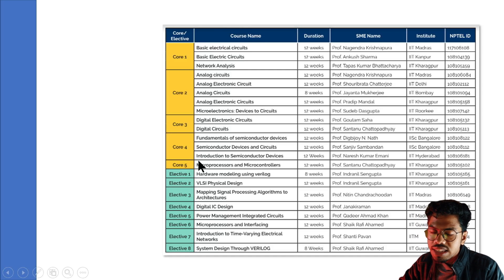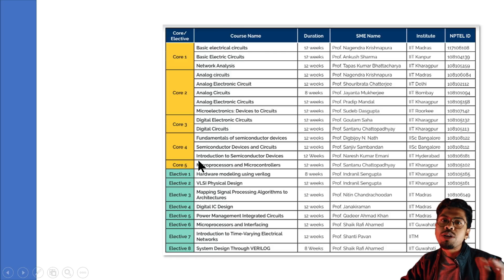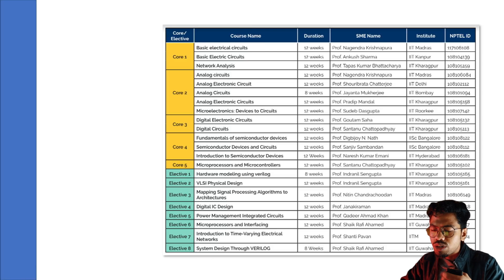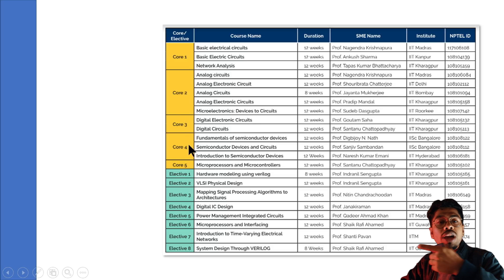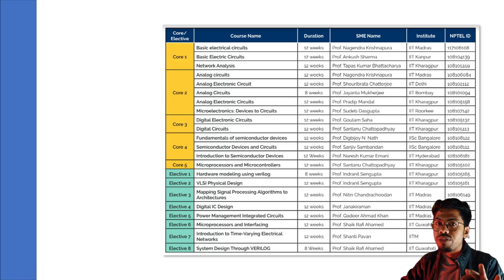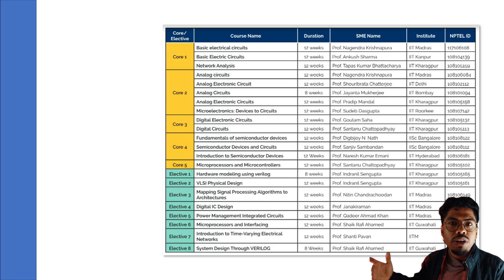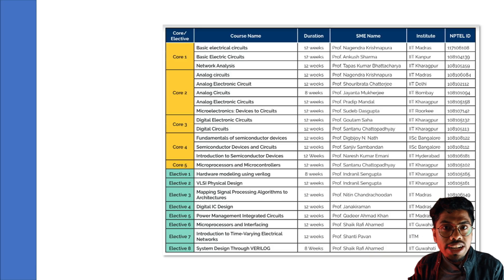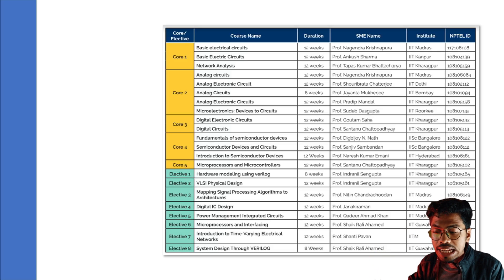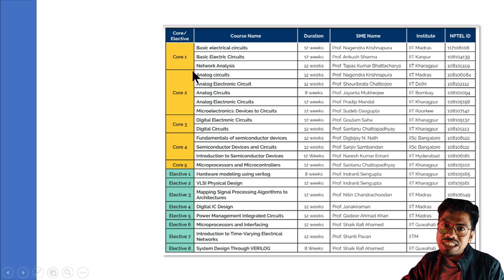For core courses, I recommend Core 1 through Core 4 — you can skip Core 5 since you only need four core courses. If you are doing MTech, you have probably already completed Core 1 through 4. If you still want this certification — perhaps because your MTech is not in VLSI or from a lower-ranked college — you just need to register, go through the course roughly, submit assignments, and take the exam.